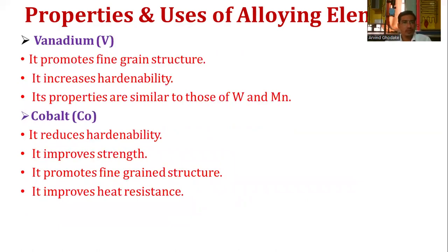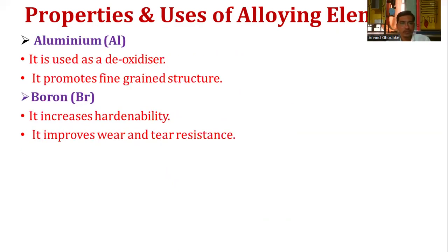Vanadium promotes fine grain structure and increases hardenability; its properties are similar to those of tungsten and manganese. Cobalt reduces hardenability but improves strength, promotes fine grain structure, and improves heat resistance. Aluminum is used as a deoxidizer and promotes fine grain structure. Boron increases hardenability and improves wear and tear resistance of steel.